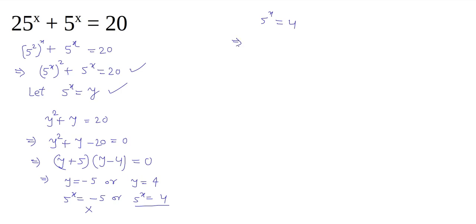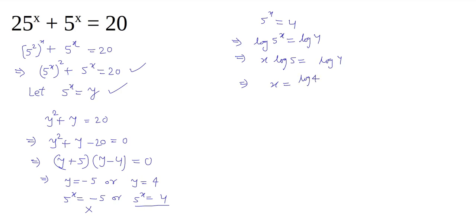Taking log on both sides, we can write log of 5 to the power x is equal to log of 4. From here, x comes into the product, giving x·log 5 = log 4, and from here x equals log 4 divided by log 5.